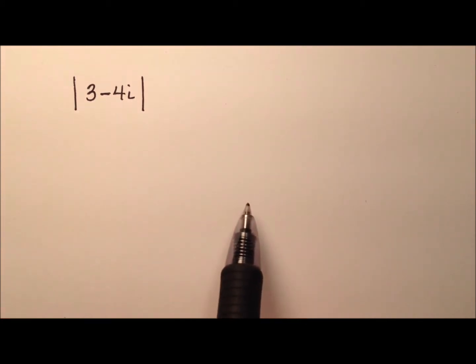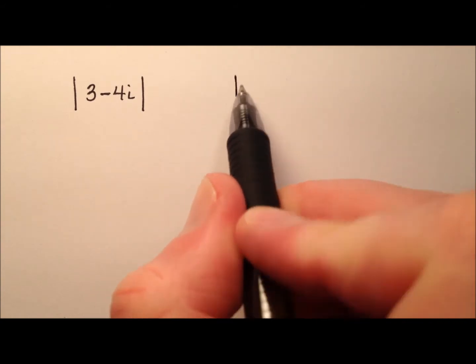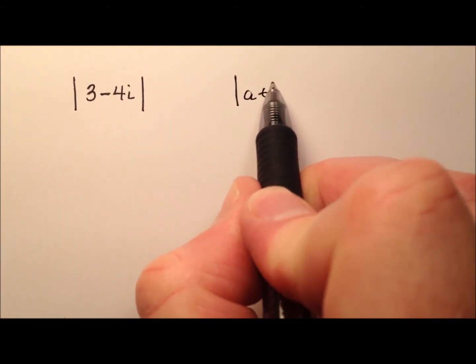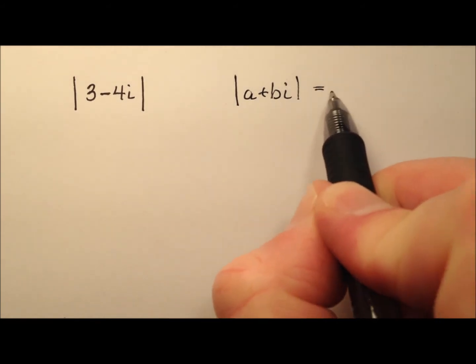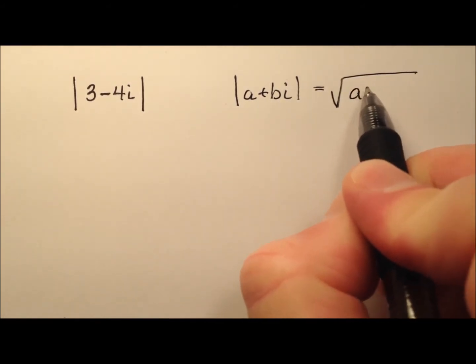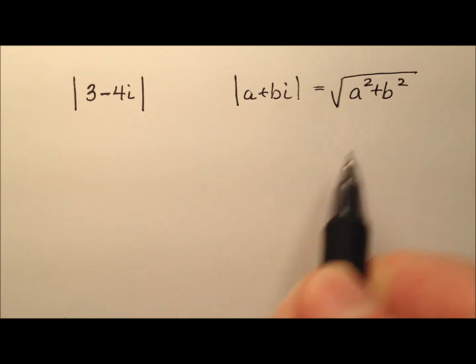So I want to show you a couple of things. First of all, we have a nice formula. The absolute value of any complex number a plus bi is going to be given by the square root of a squared plus b squared.